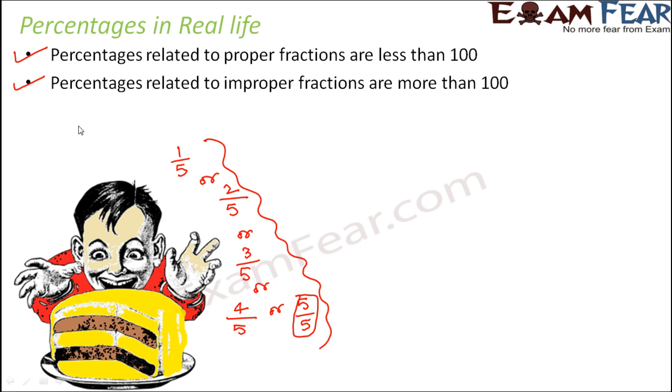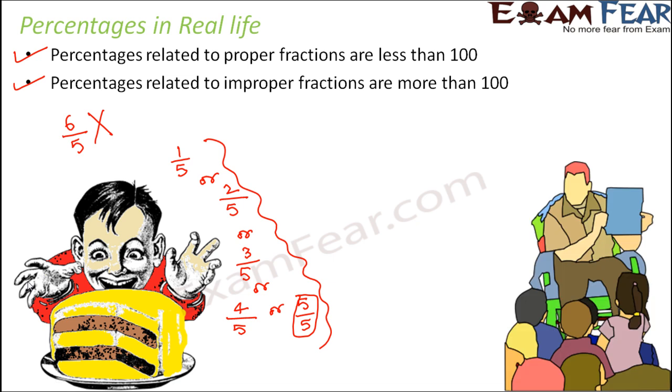And when the numerator and denominator are equal that time the percentage is exact 100 percent. Now do you think that you can eat 6 slices of the pizza out of 5 slices? No because you have a total of 5 slices. So how can you eat 6 slices? You do not have 6 slices at all. Right? So in this scenario you will always end up having proper fractions and therefore your percentage will always be less than 100 percent.